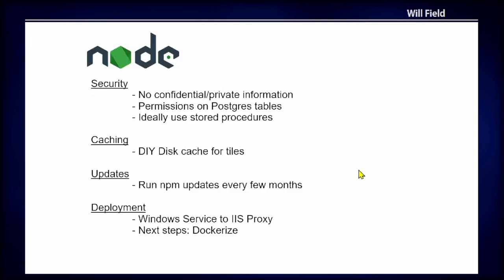Keeping it up to date: like I mentioned, it was really difficult to keep .NET up to date. Node is easier, but we still have to make sure packages are updated when there are new releases — so we run NPM updates to update packages. For deployment, we're hosting our API and our front end through IIS. We have a somewhat complicated way of running the Node API as a Windows service. This is something I really wanted to change — I really want to use Docker and simplify the deployment.